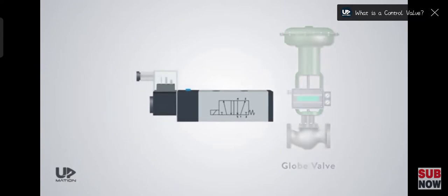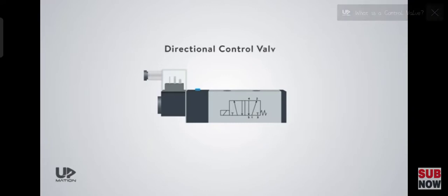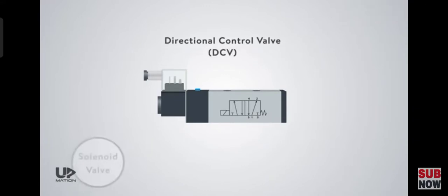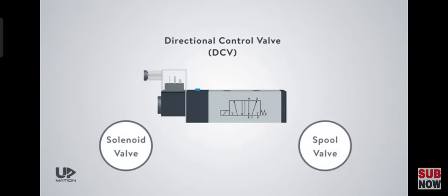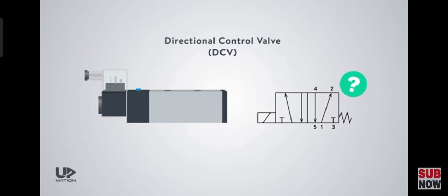But today's video is about different types of control valves, known as directional control valves or DCVs for short. You may hear of them as solenoid valves or spool valves as well. If you want to know how they work and how you should read and interpret their symbols, stay tuned for the rest of this video and please subscribe and click the notification bell for more videos like this.